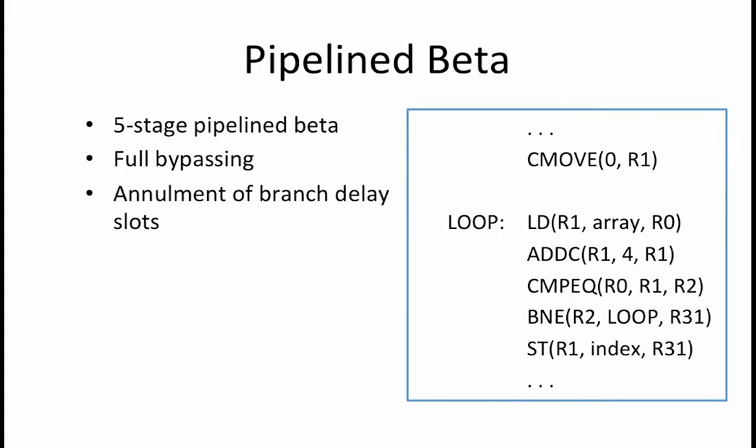If they are not equal, then we store the current value of R1 into a memory location called index, to remember which index value satisfied the compare instruction. We want to understand how this program would run on our beta.